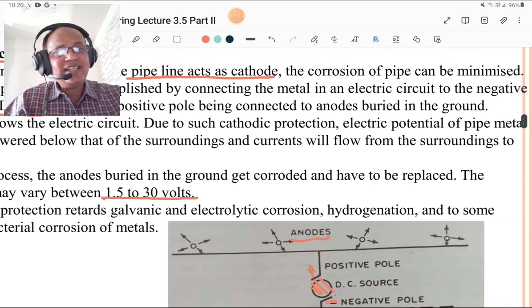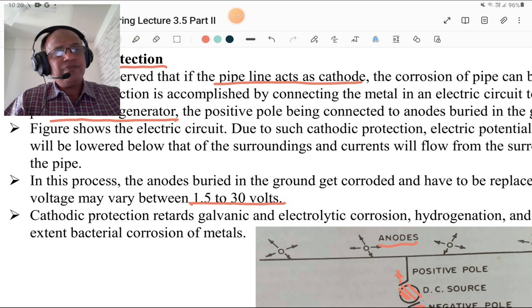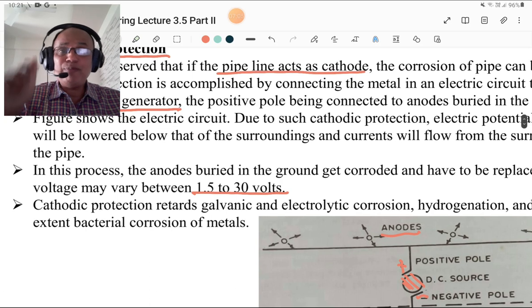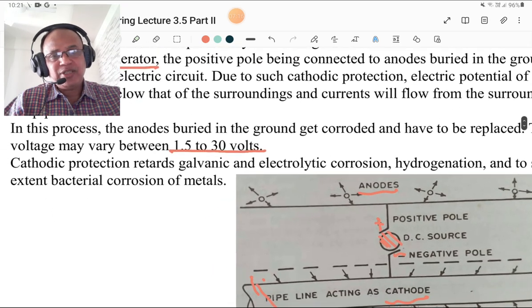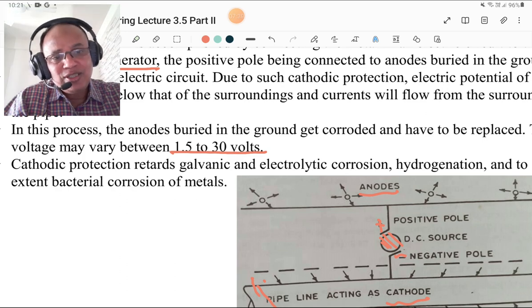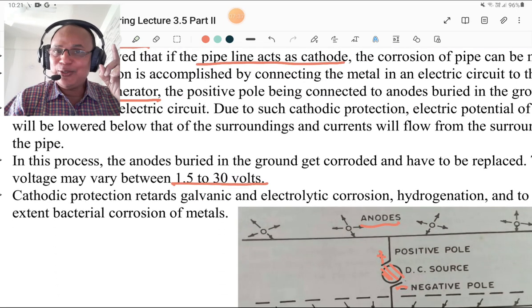Due to such cathodic protection, electrical potential of pipe metal will be lowered below that of surroundings, and current will flow from surroundings to the pipe. In this process, anodes are buried into the ground and get corroded, and have to be replaced at regular intervals. Voltage may vary between 1 to 30 volts. Cathodic protection retards the galvanic and electrolytic corrosion, hydrogen generation, and to some extent bacterial corrosion of the metal. So it is very important process. You must know that the cathode is the pipeline and anodes are buried into the ground, and current is flowing from surrounding to the pipe.